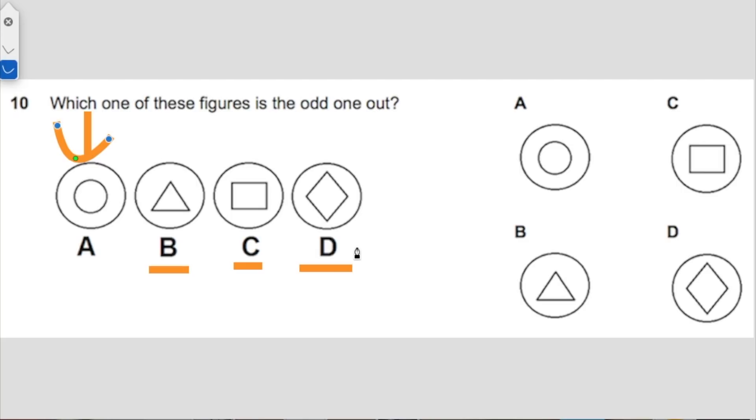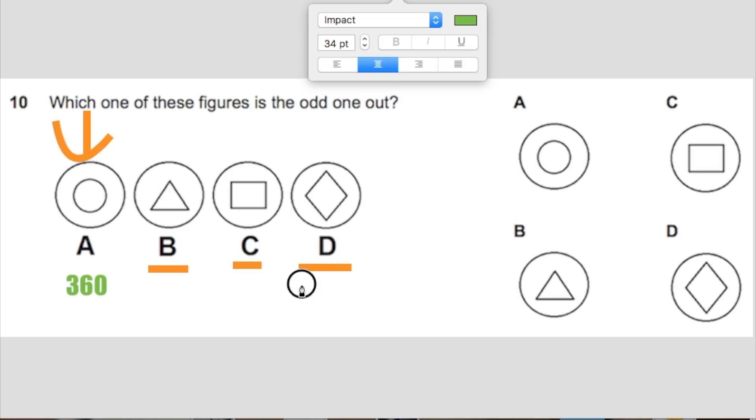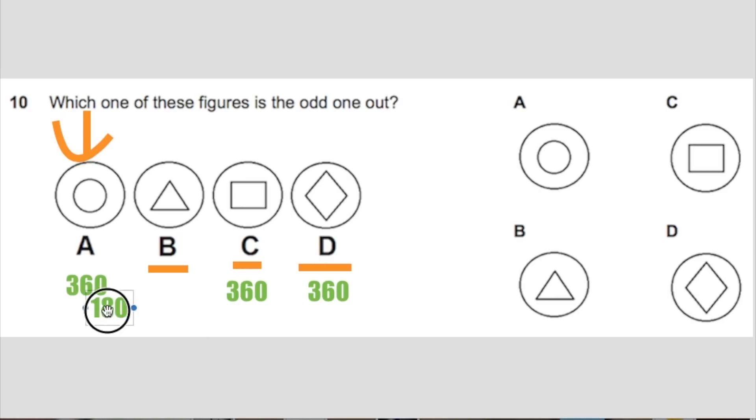What you need to do is find out what rule binds all three together. So one of these rules is the angle. We know that a circle has 360 degrees as an angle, and the same with C, A, and D. And we know that a triangle has just 180 degrees as an angle. So this is a rule where you can say, okay, we've got a rule now that means A, C, and D are the same. And therefore, the figure that is the odd one out would be B.